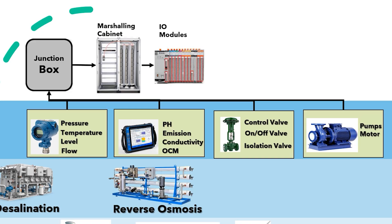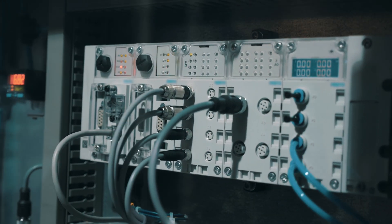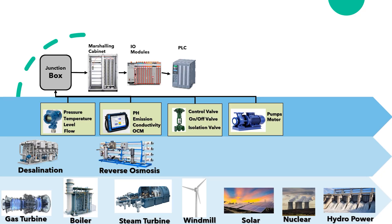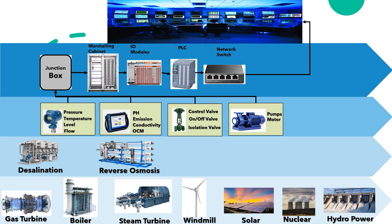From the marshaling panel, the signals are connected to the input/output modules of a PLC or DCS. The main automation logic is stored and programmed in the PLC or automation processor. The software signal is passed to the control room through industrial network switches, and finally, control and monitoring is done in the control room.